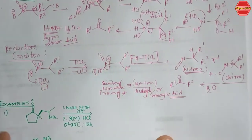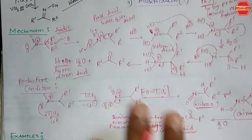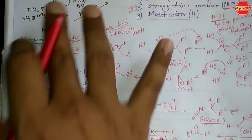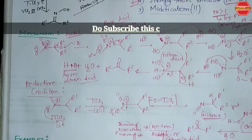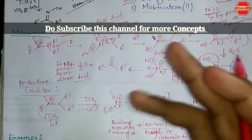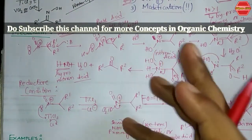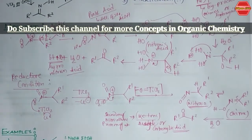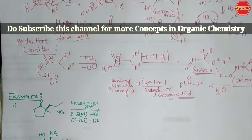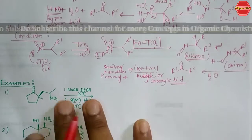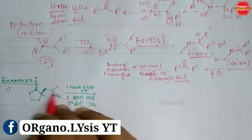If you don't want to use these conditions, you can modify the reaction using a reducing agent, butyllithium, or TMS reagents. Now let's look at some examples. A nitroalkane is given with sodium hydroxide as base and acidic conditions, and you can predict the product will be a ketone.